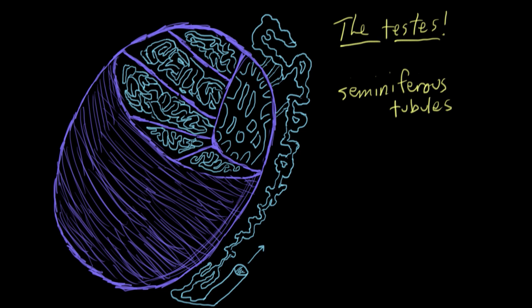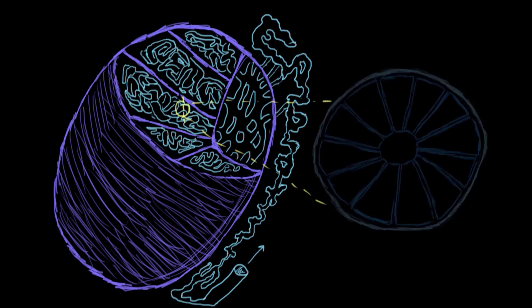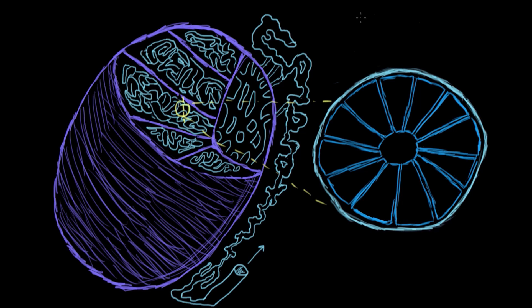To appreciate the process of sperm production and how it all happens, we need to take a look inside the seminiferous tubules. This is a cross-section of the tubule, sort of magnified so we can see the components a bit better. This light blue layer along the top here is a muscle-like layer that helps to propel sperm through the tubules and into the epididymis.